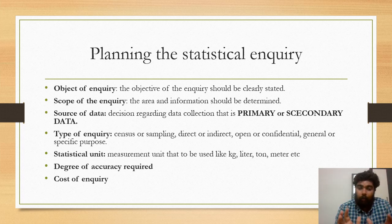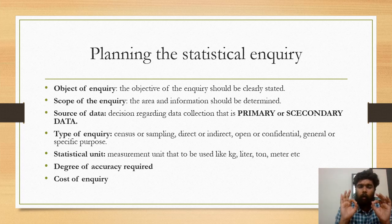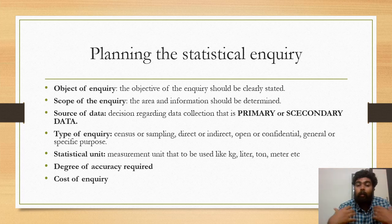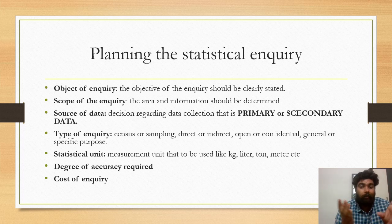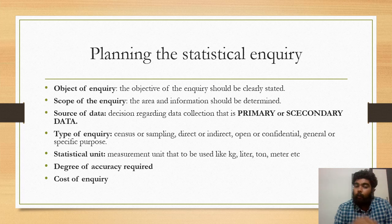The next element is the scope of the enquiry. Then comes the source of data, which includes primary data and secondary data. Data that we determine or identify freshly is called primary data. Data identified by another person or institution is called secondary data. The next element is the type of enquiry.